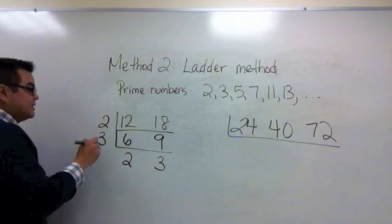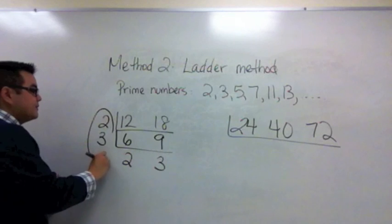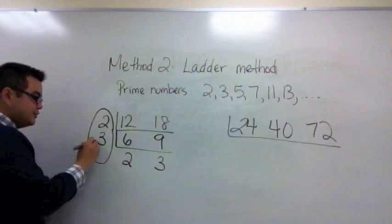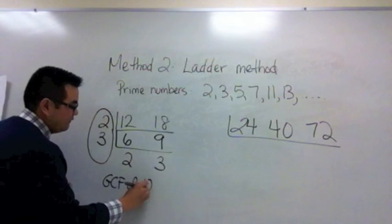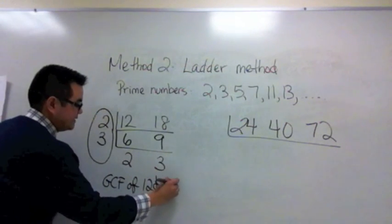To find the GCF of 12 and 18 we simply multiply all the numbers on the left side of the ladder. 2 times 3 is 6. So the GCF of 12 and 18 is 6.